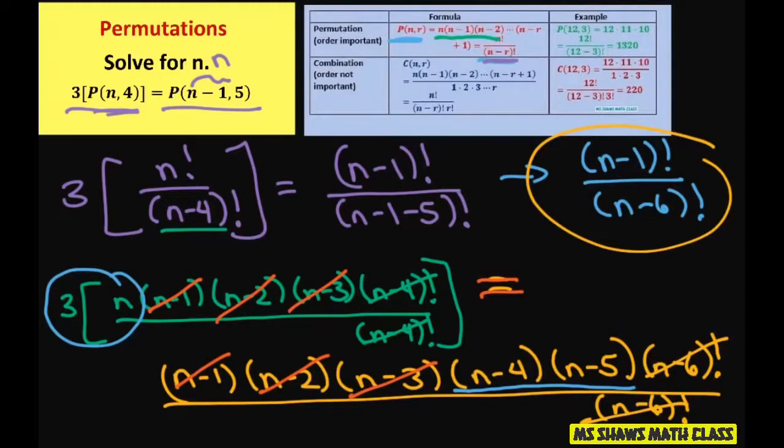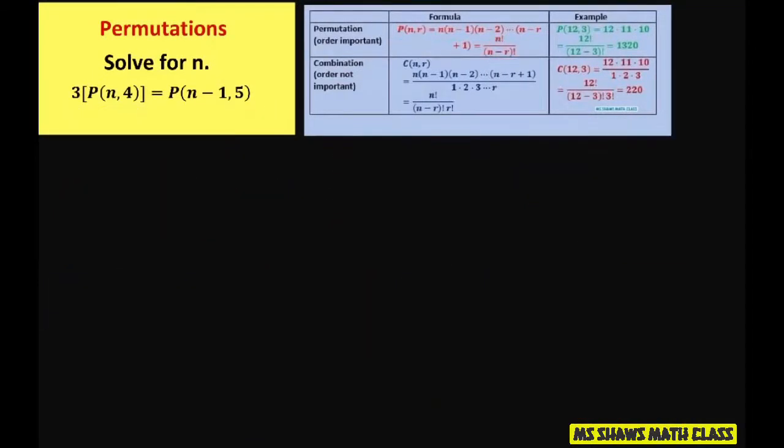I just want to make sure you see the problem. Alright, so now we have 3n equals n minus 4 times n minus 5.